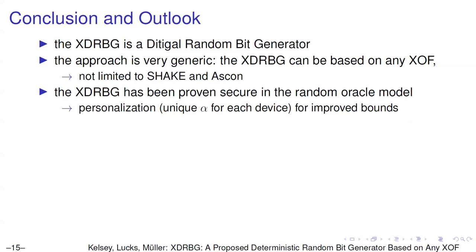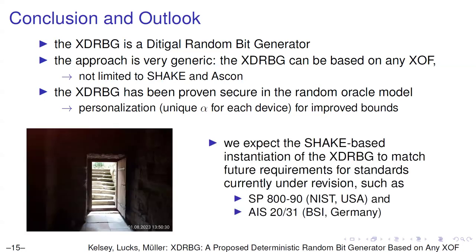To conclude: XDRBG is a digital random bit generator and our approach is very generic — you are not required to use Ascon or SHAKE, you can use whatever XOF you prefer and plug in our construction, using our security bounds for an estimate of your construction's security, assuming your XOF is secure. The personalization trick of giving each device a unique ID is useful for improved bounds. We expect the SHAKE-based instantiation to match future requirements for standards currently under revision, such as SP 800-90 from NIST and AIS 2031 from BSI.